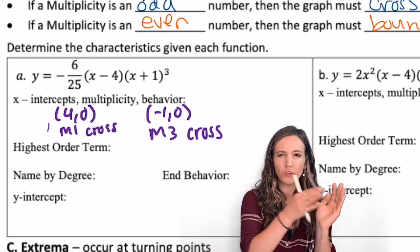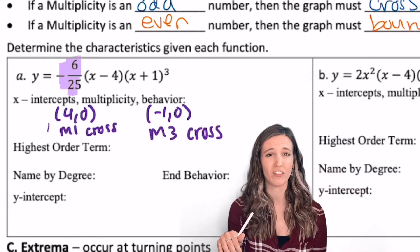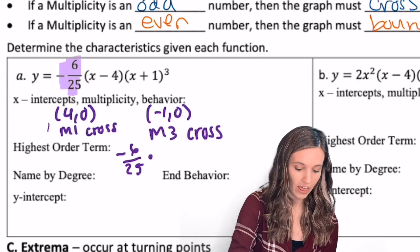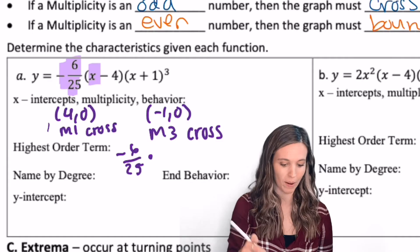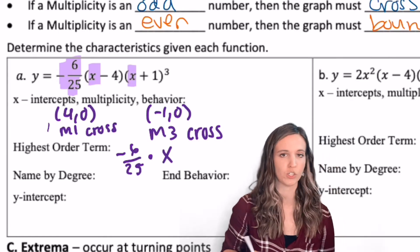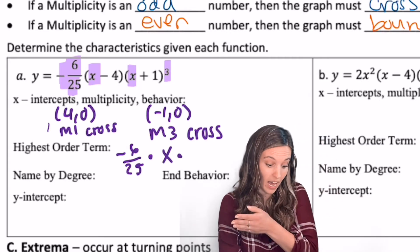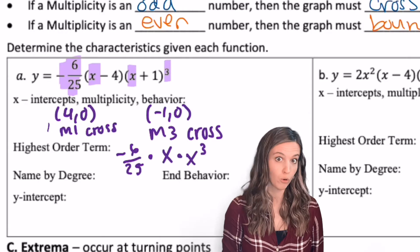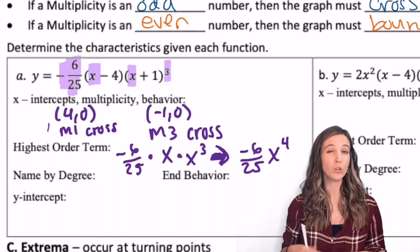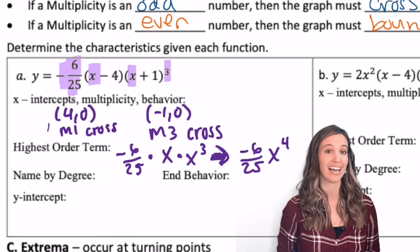So highest order term. Let's go ahead and multiply those first pieces to figure out what the highest order term is here. I know that negative 6 25ths is getting multiplied by this whole polynomial, so that's for sure going to be part of my highest order term. Then next I have an x, and I also have an x in this x plus 1, but that x is being cubed. So I'm actually multiplying by x again three more times, or I could just write it as multiplying by x cubed. So that comes out to be negative 6 25ths x to the fourth power.